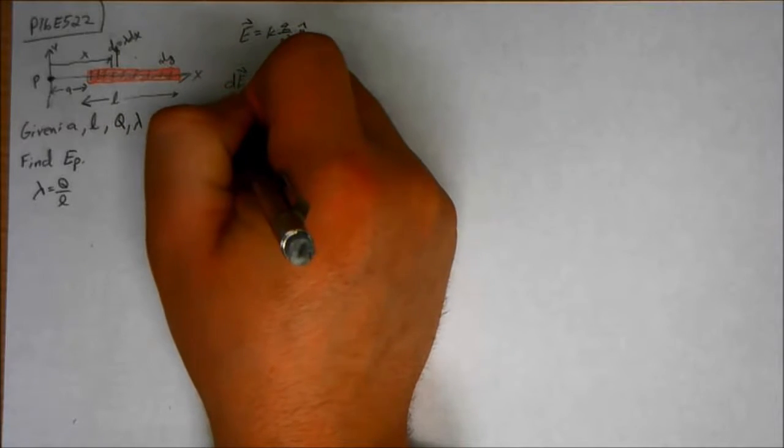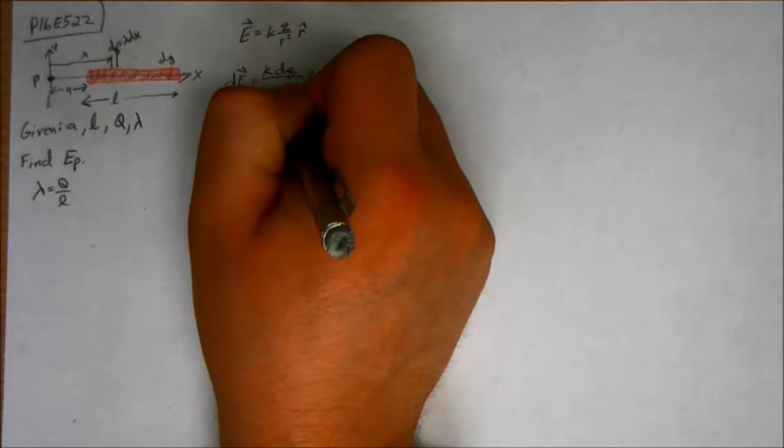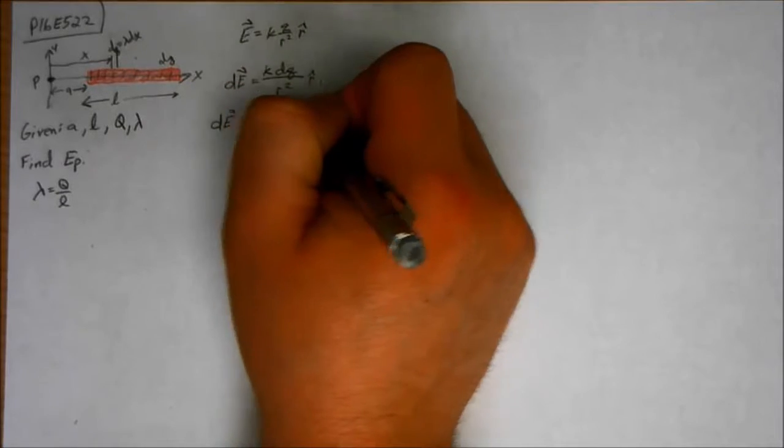So it's only going to be along the x direction. So I'm going to say DE equals K DQ over R squared i-hat.